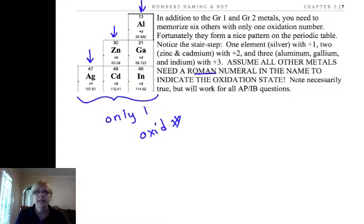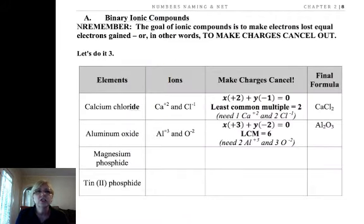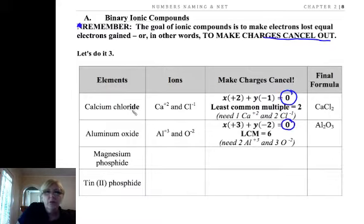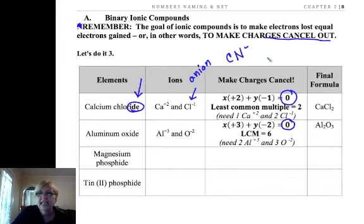Now let's start with binary ionic compounds. Remember, the goal of making an ionic compound is to make the charges cancel. In other words, we're making a neutral formula unit. Now we have to get into naming a little bit. We go back and forth between formula writing and naming, which comes first, and it's kind of a circular process. Now IDE means it's the single element anion with the exception of cyanide and hydroxide. So if you see IDE, it's a single element anion.